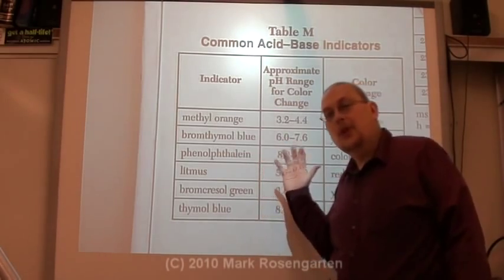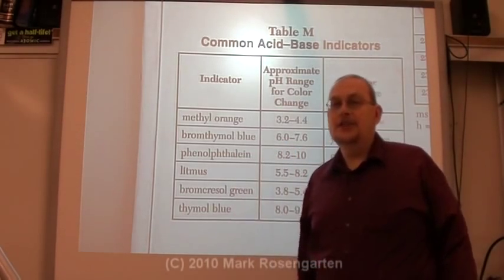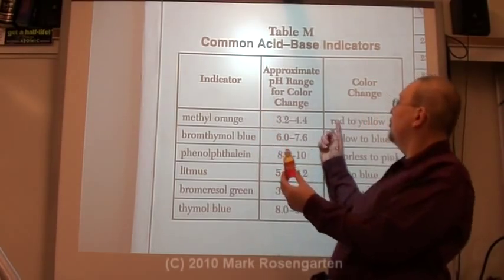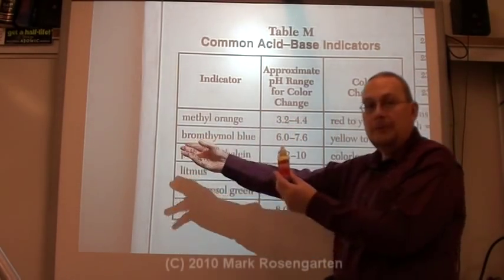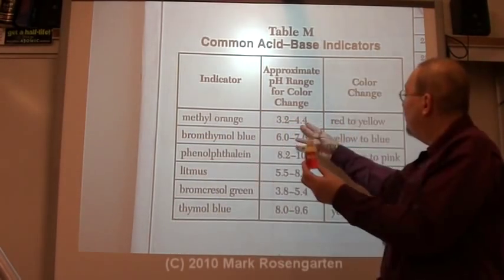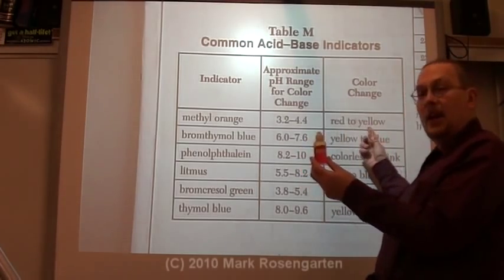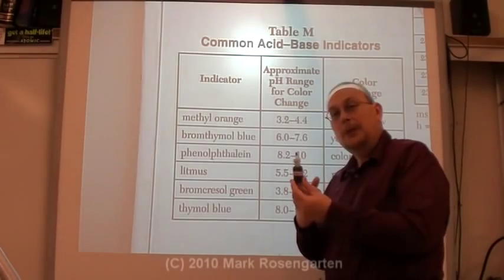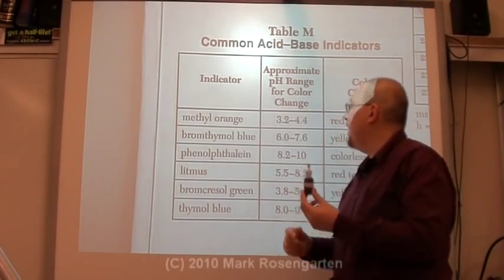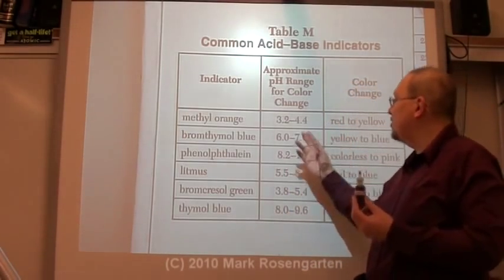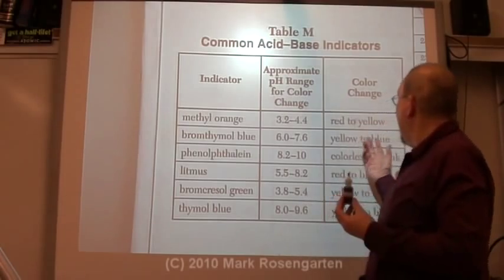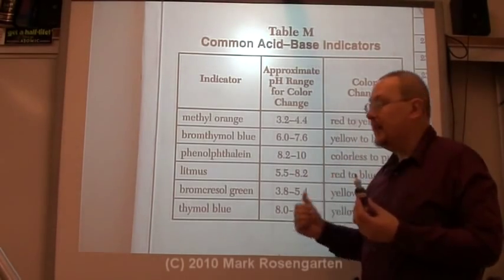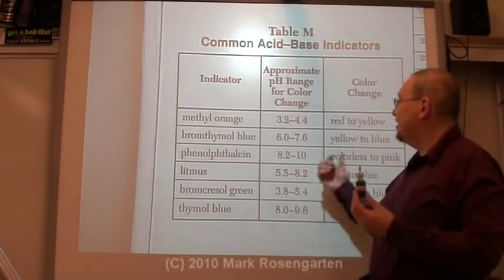There are also chemicals called indicators that change color depending on what the pH is. Methyl orange is red at a pH below 3.2, yellow at 4.4 and up, and orange in the middle. Bromothymol blue is yellow at a pH of less than 6, blue at a pH of greater than 7.6, and green in between.